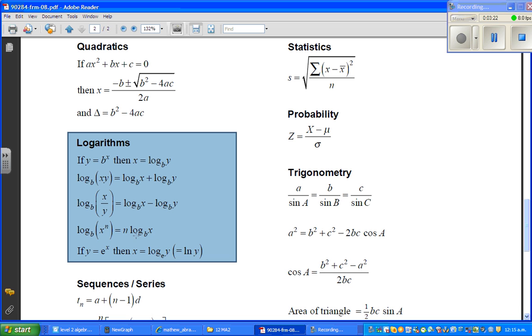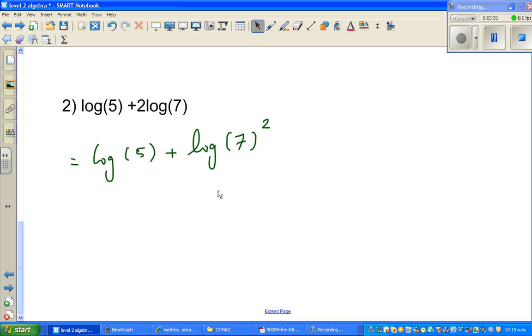So, we had 2 log 7, which is log of x to the power n. So, 2 log 7 is log of 7 squared. So, this is same as log of 5 plus log of 49.